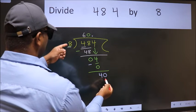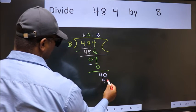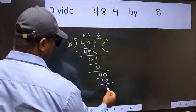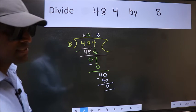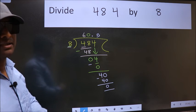So 40. When do we get 40 in 8 table? 8 times 5 is 40. Now we subtract, we get 0. Did you understand where the mistake happens? You should not do that mistake.